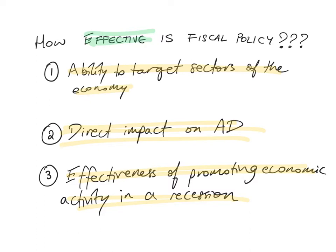During the Great Depression, when there is a big recession or depression, fiscal policy is very effective. An expansionary fiscal policy — where the government cuts taxes, increases government spending, employs people, and builds infrastructure — can be very effective in giving the economy a boost during a recession and promoting economic activity. These are some strengths and advantages of fiscal policy.